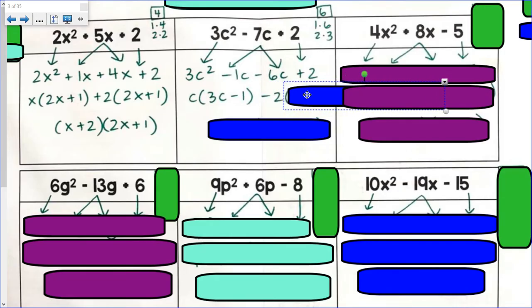So I'm going to factor out a negative 2 in this case to get 3c minus 1. And you'll notice that if you don't factor out a negative, your twins won't be twins. Like this will actually, if I factored out a positive 2 here, this would have then been negative 3c plus 1.